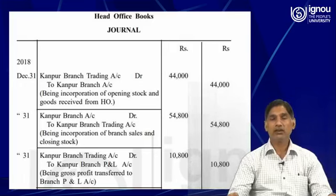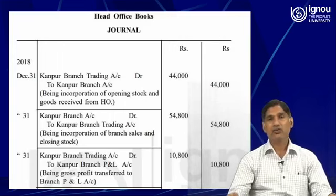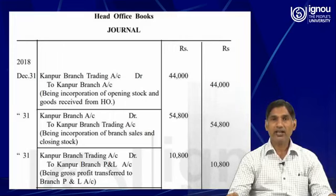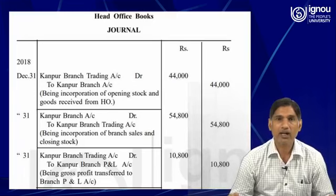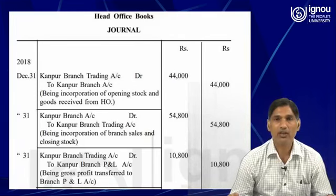The total of the debit side will arrive at the gross profit and vice versa. For that, the third entry will be prepared: Kanpur branch trading account debit to Kanpur branch profit and loss account, 10,800.